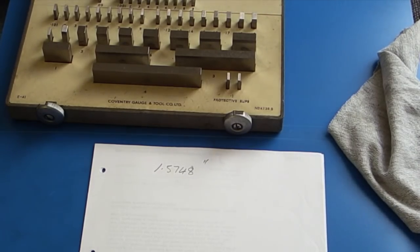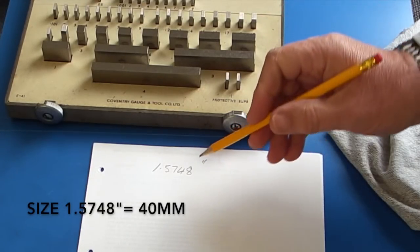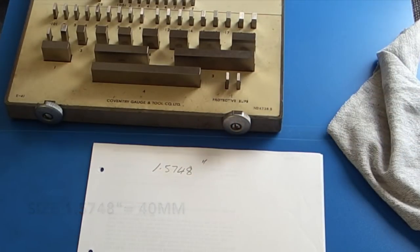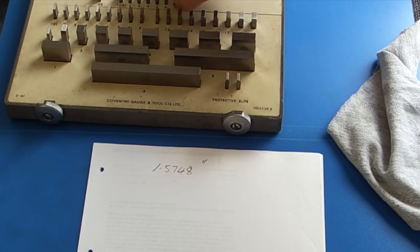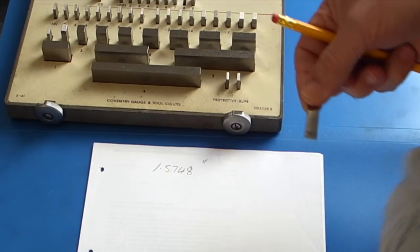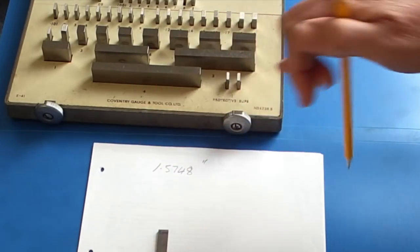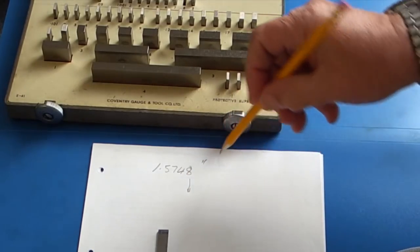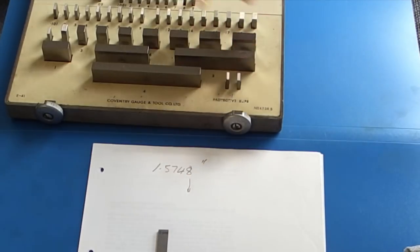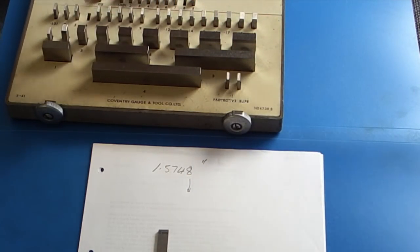I'll start building up the size 1.5748. So you start with the smallest number first. You can see from this set at the back here it goes up in tenths of a thou. So we'll start with the eight tenths. Which is that one. So we've got the eight. Now we want four thou, which is the second row here. These are in thou, which is the four thou. So we've got the four.